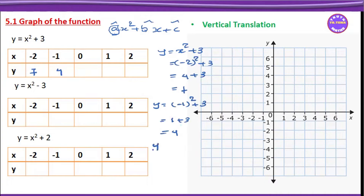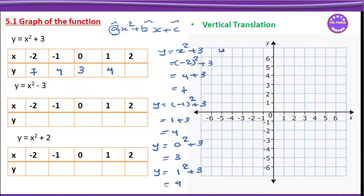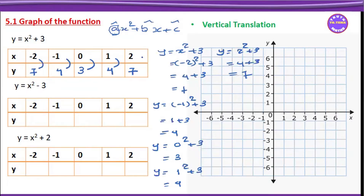For x equals 0: y equals 0 squared plus 3, which equals 3. For x equals 1: y equals 1 squared plus 3, equals 4. For x equals 2: y equals 2 squared plus 3, equals 4 plus 3 equals 7. So the table of values is: minus 2 gives 7, minus 1 gives 4, 0 gives 3, 1 gives 4, 2 gives 7.